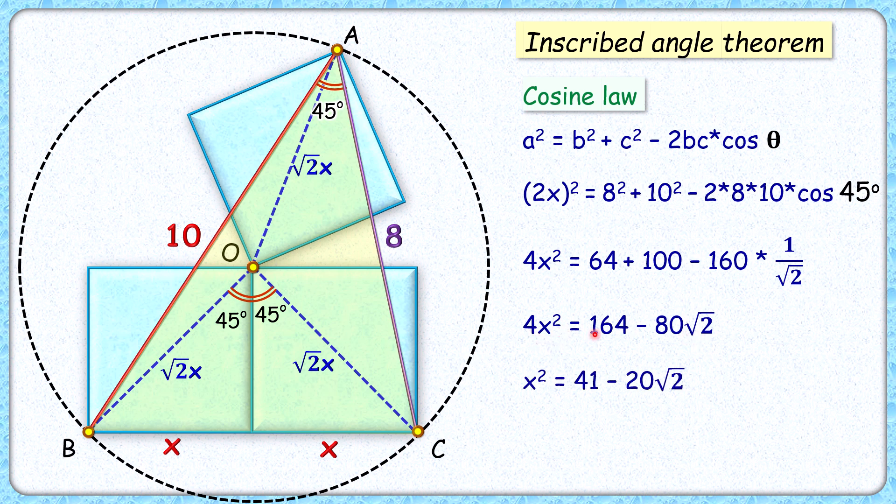And x² that will be 41 - 20√2, and x² is what is area of this blue square which we had to find. And thus area of square in decimal that will be 12.72 centimeter square, and that's our answer.